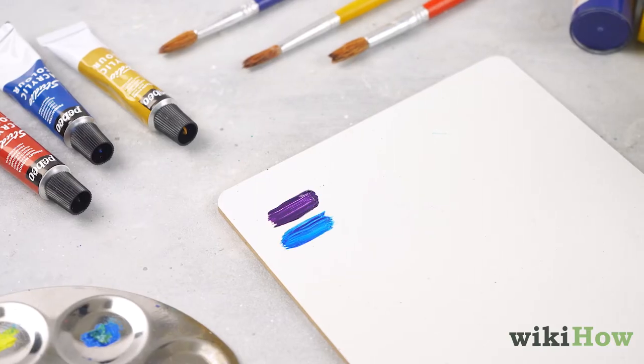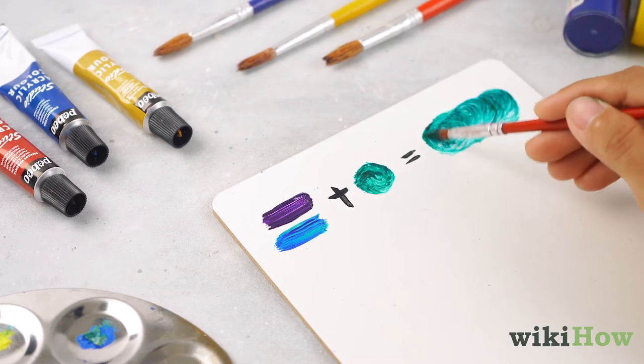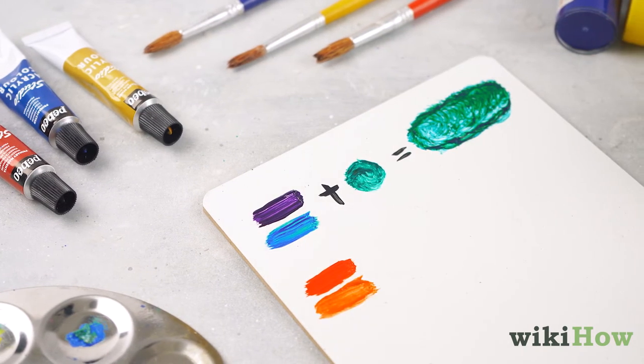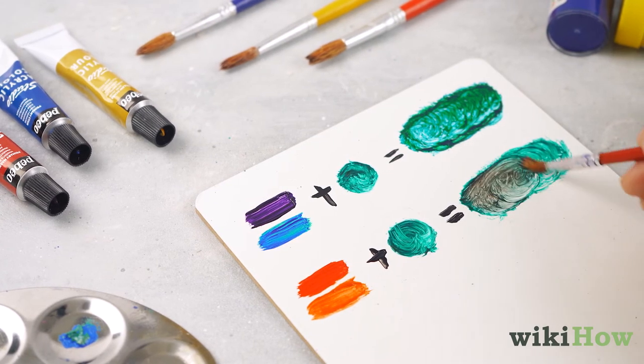Mixing purple or blue paint into green will give you a cooler green shade, while mixing red or orange paint into green will give you a warmer shade of green.